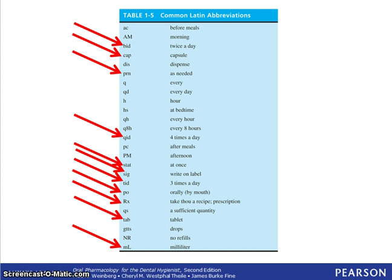This table shows the common Latin abbreviations, and I have put arrows next to the most common abbreviations that we use. BID stands for bis in die, which means twice a day. CAP is short for capsule. PRN means pro re nata, which is as needed. QID means quater in die, which means four times a day. STAT is short for statim, which means immediately or at once. SIG stands for signatura, which means written on label. TID stands for ter in die, which means three times a day.